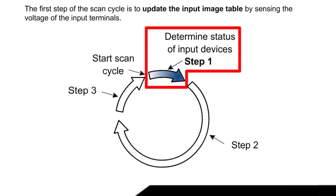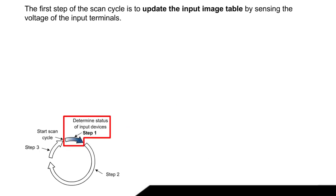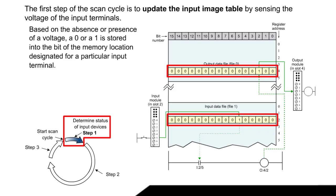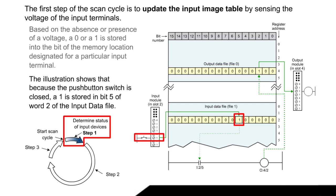The first step of the Scan Cycle is to update the input image table by sensing the voltage of the input terminals. Based on the absence or presence of a voltage, a 0 or a 1 is stored into the bit of the memory location designated for a particular input terminal. The illustration shows that because the push-button switch is closed, a 1 is stored in bit 5 of word 2 of the input data file.